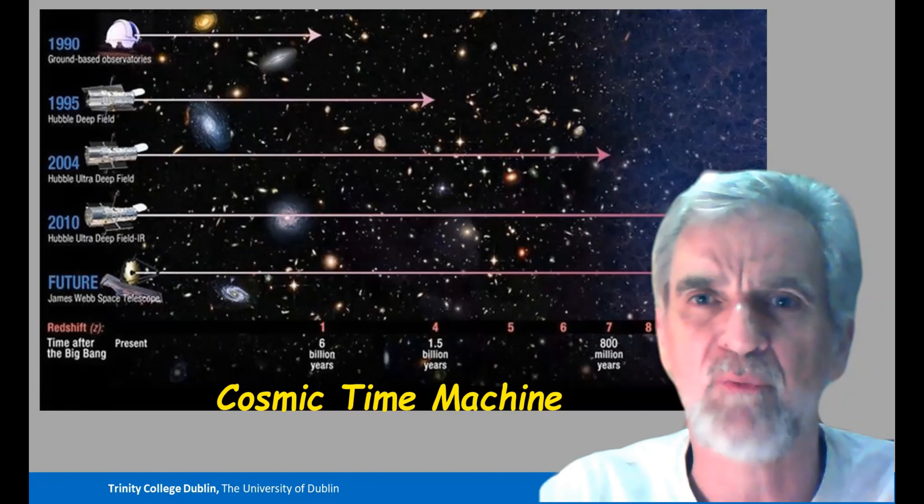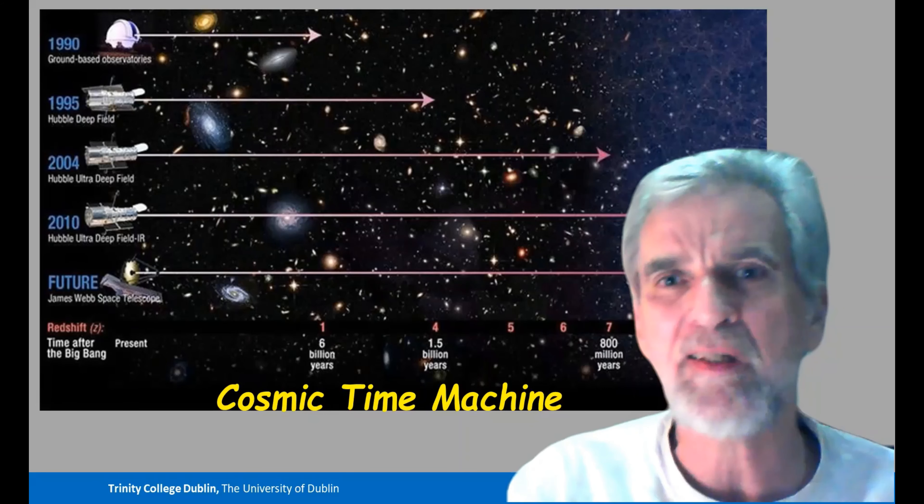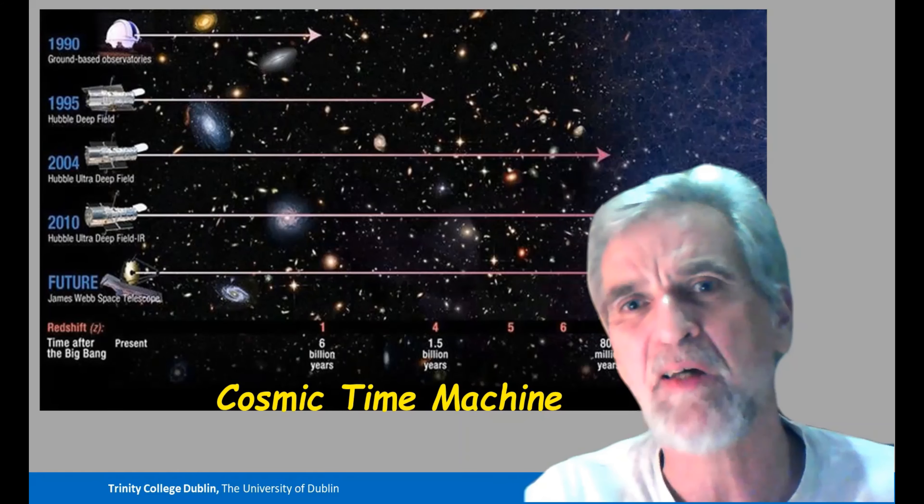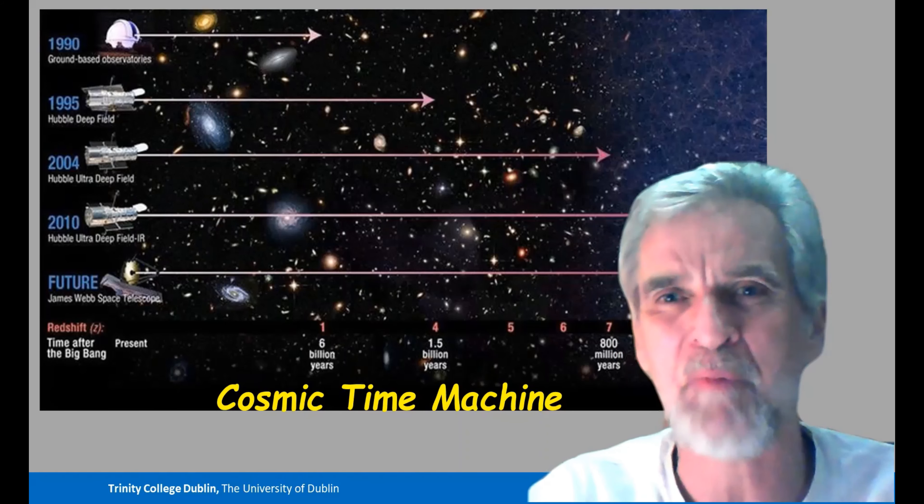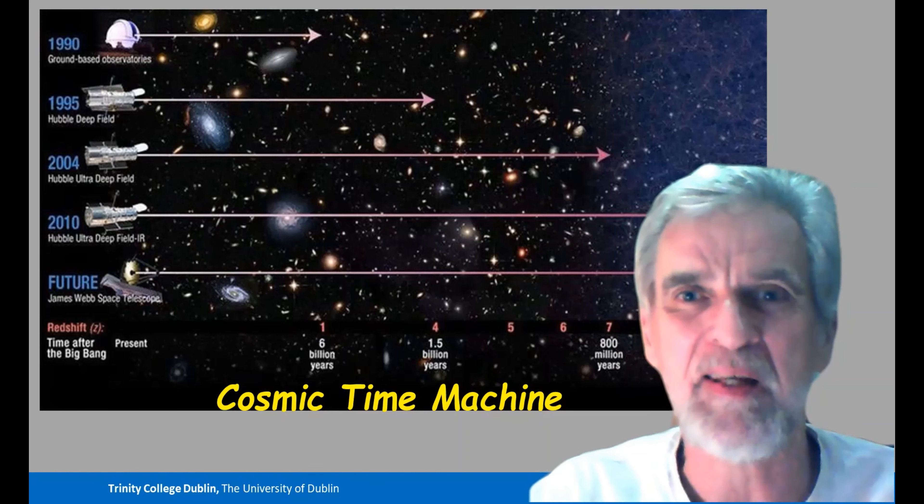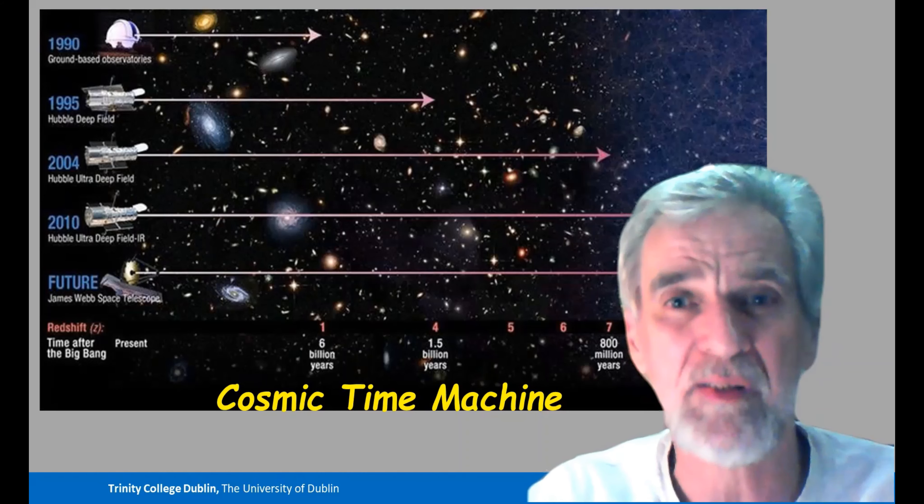that we're seeing the universe when it was much younger. So we're able to study the universe in the way of a cosmic time machine to actually look back and study things that happened before even the Earth or the Sun were born.